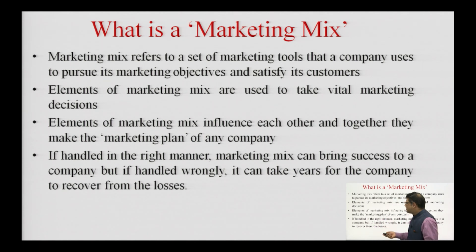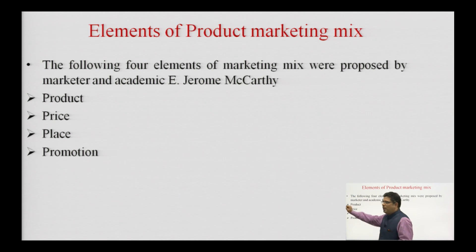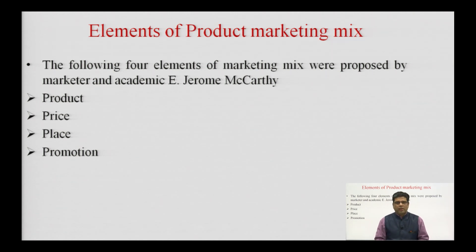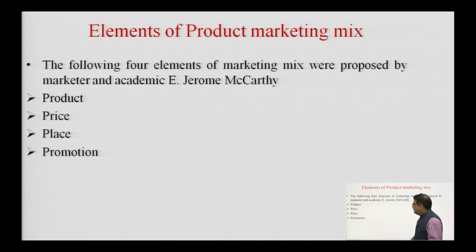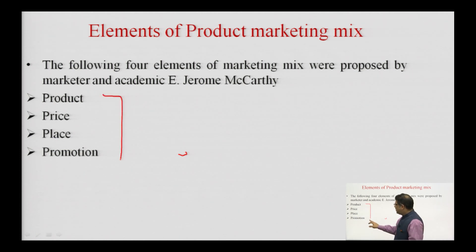A very famous marketer and academician, E. Jerome McCarthy, proposed the idea of the four P's, which are famously called the elements of marketing mix for a product. Jerome McCarthy did this during 1960. The first element is product, the second is price, the third is place, and the fourth is promotion — these are the famous four P's of a product.